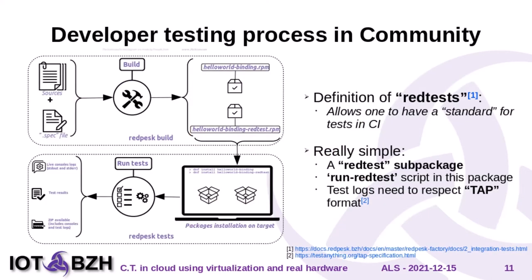In order to make it work, developers need to integrate a few things inside their packaging, which correspond to the RedTest definition. One of these things is to have a RedTest sub-package from the main package. Inside this package, you need a RunRedTest script that will be run by the CI infrastructure to execute the tests. This test needs to output a TestAnything Protocol file, which will be parsed by the infrastructure to get the test results. TestAnything Protocol is a simple protocol.